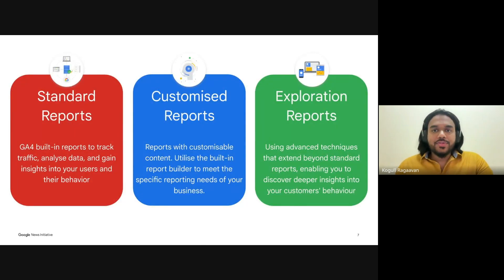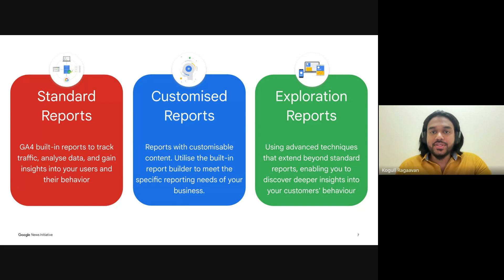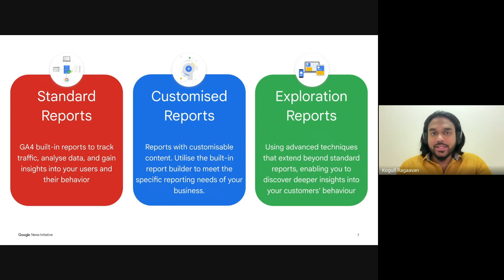In GA4, we have three core types of reports essential for understanding and optimizing user behavior on your site. Each offers unique ways to help you understand, optimize, and elevate your content's performance. First up, standard reports — think of this as your bird's-eye view, designed to give you an overview of how users are interacting with your site. For publishers, this means seeing where your readers are coming from — whether it's social media, search engines, or direct traffic. Standard reports provide a high-level snapshot of traffic, engagement, and page performance to help you see the bigger picture.